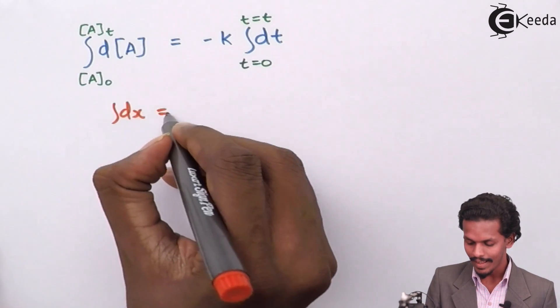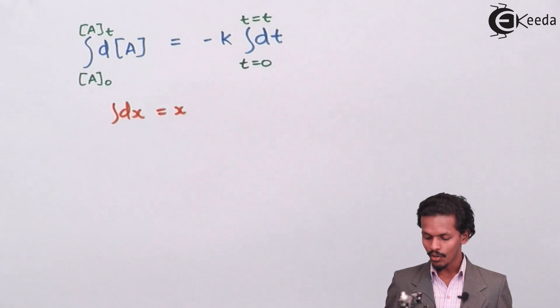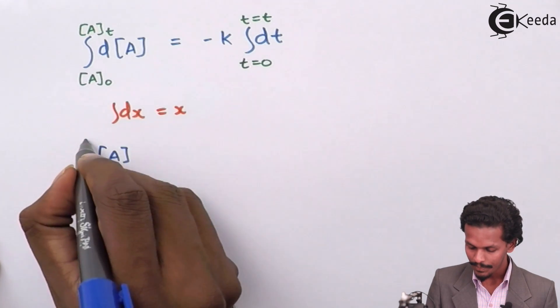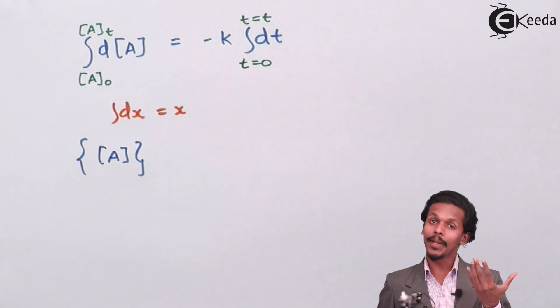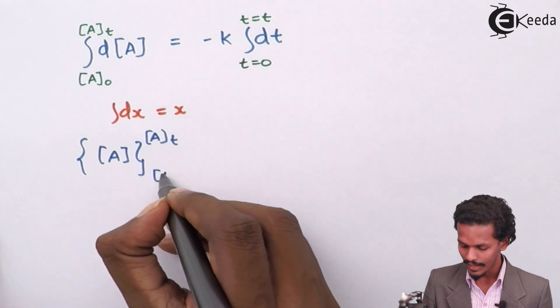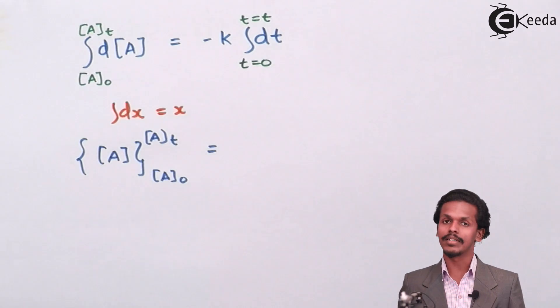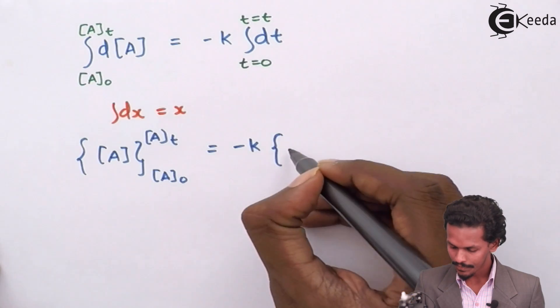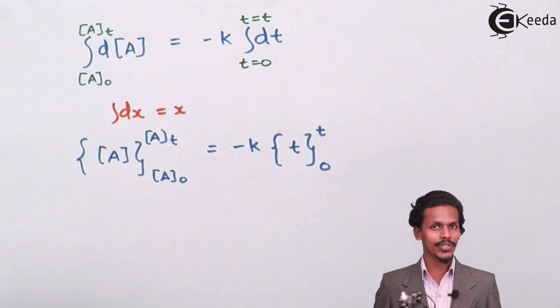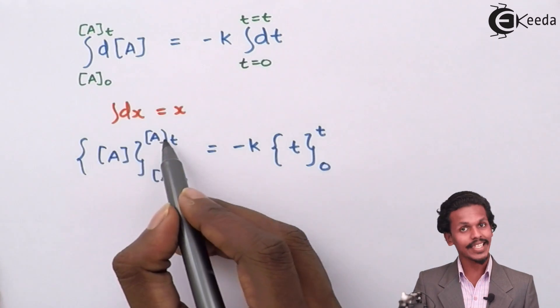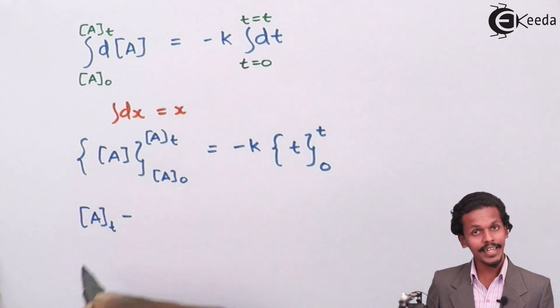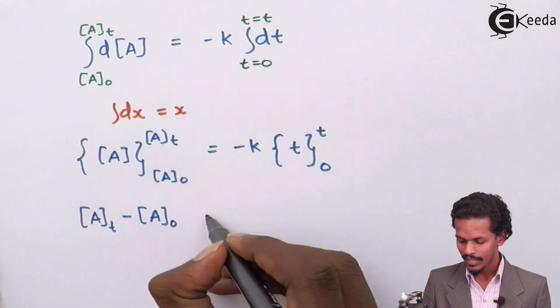Since we know that integration of dx is x, similarly the integration of d[A] will be [A] with limits, that is with the upper limit when A is [A]ₜ and lower limit when A is [A]₀. Similarly we can apply limit for the time also, when time t equals t and lower limit when t equals zero. After doing this equation, what we get is [A]ₜ minus [A]₀ equals minus Kt.